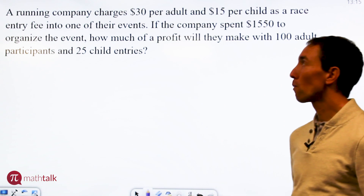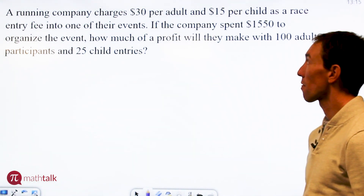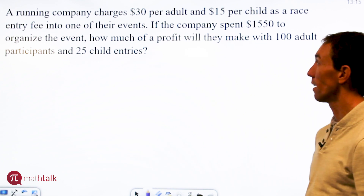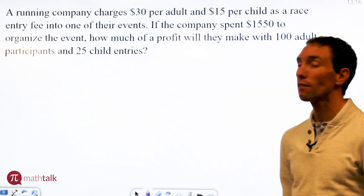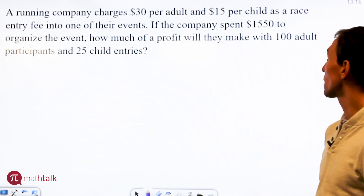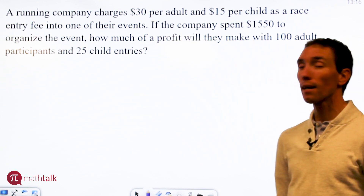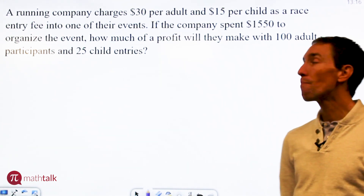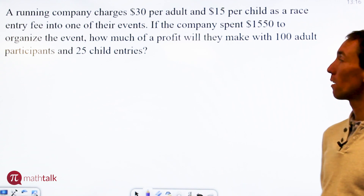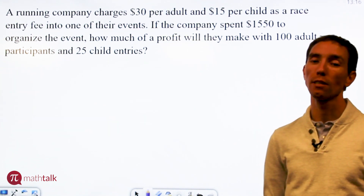So I'm going to jump right into a word problem. It says a running company charges $30 per adult and $15 per child as a race entry fee into one of their events. If the company spent $1,550 to organize the event, how much of a profit will they make with 100 adult participants and 25 child entries?